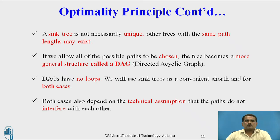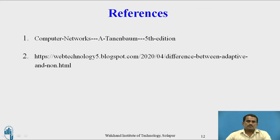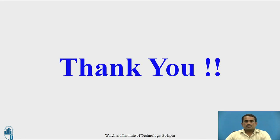We use the sink tree as a convenient shorthand for both cases — sending and tracing data — where loops may not occur, dependent on the assumption that paths do not interfere with each other. In a Directed Acyclic Graph, loops do not occur; if looping happens while sending data, the data may not reach the destination. This concludes the optimality principle. Thank you.